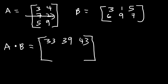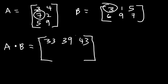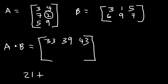Now let's move on to the second row, first column — we'll place that entry there. So we have 7 times 3 which is 21, and then 2 times 6 which is 12. Twenty-one plus 12 is 33.